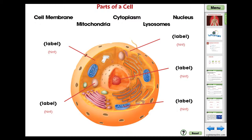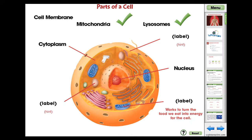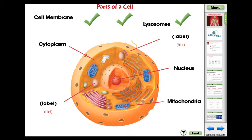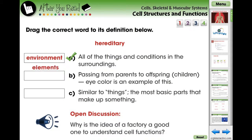The Parts of a Cell activity is an engaging mini to support the comprehension of the content in the reading passage. Students label the parts of a cell by dragging the correct word to its image. Students can touch the hint button to reveal a description.